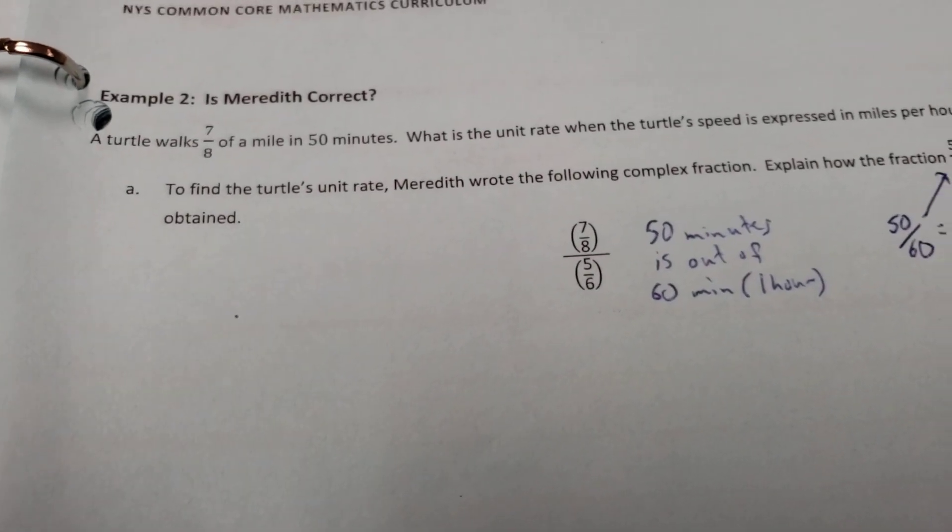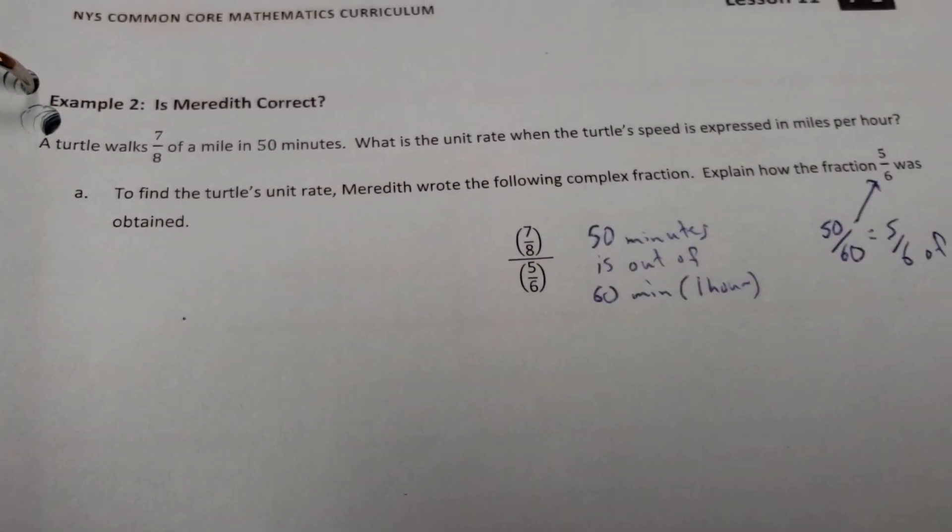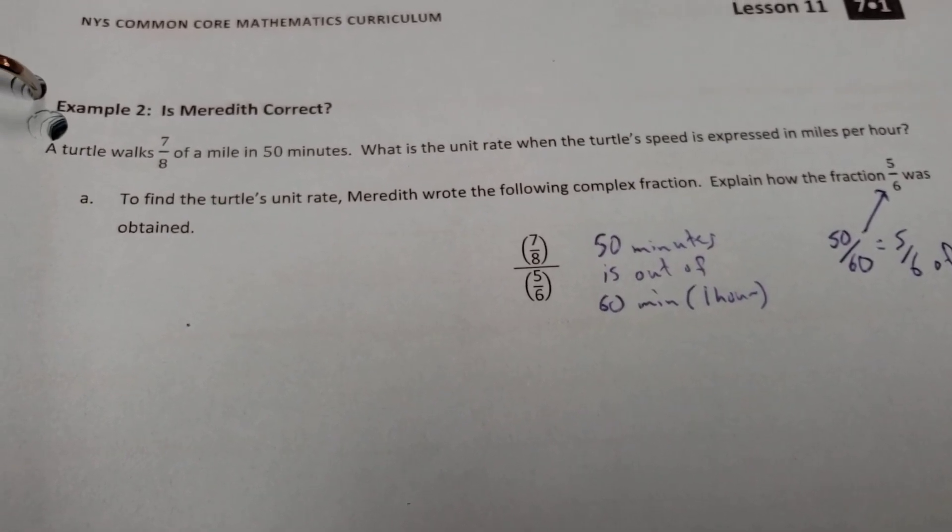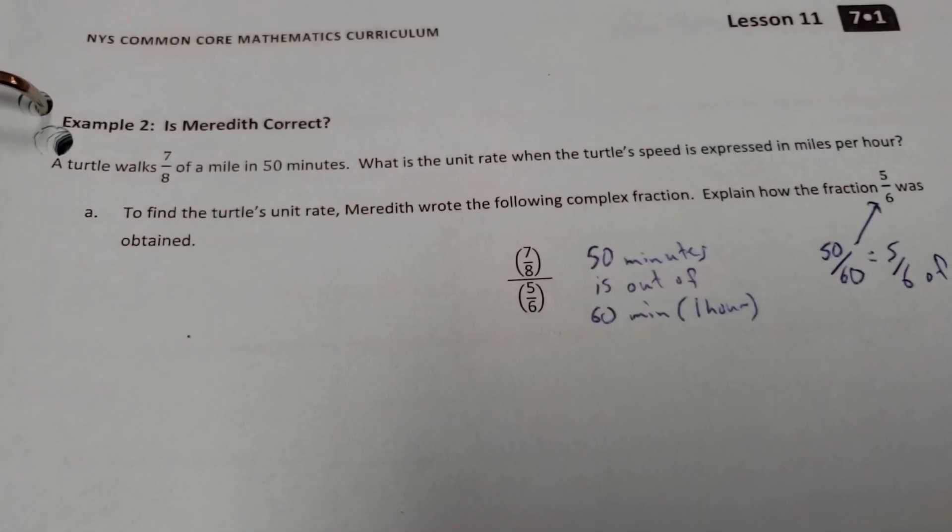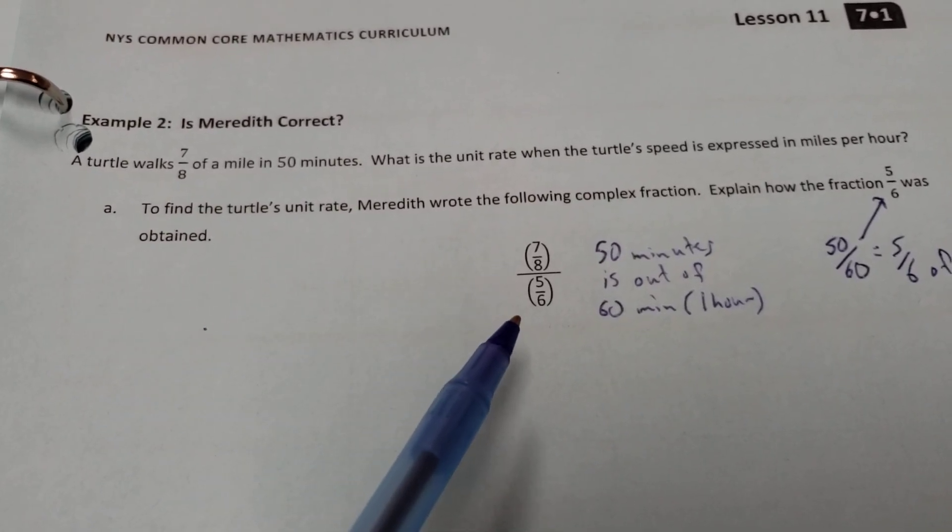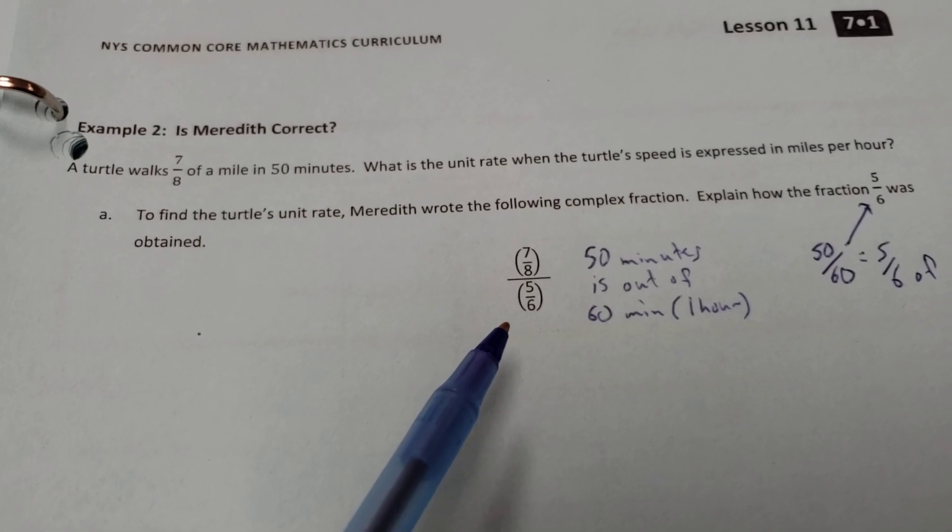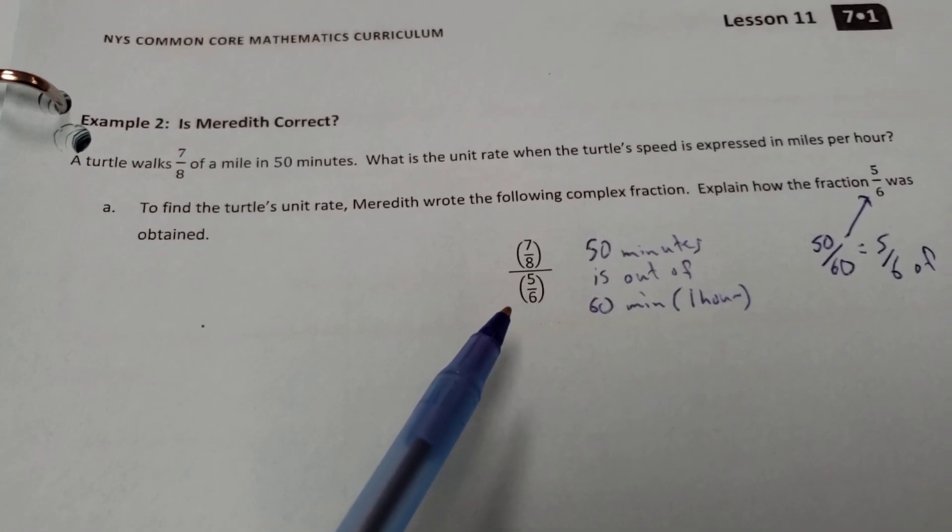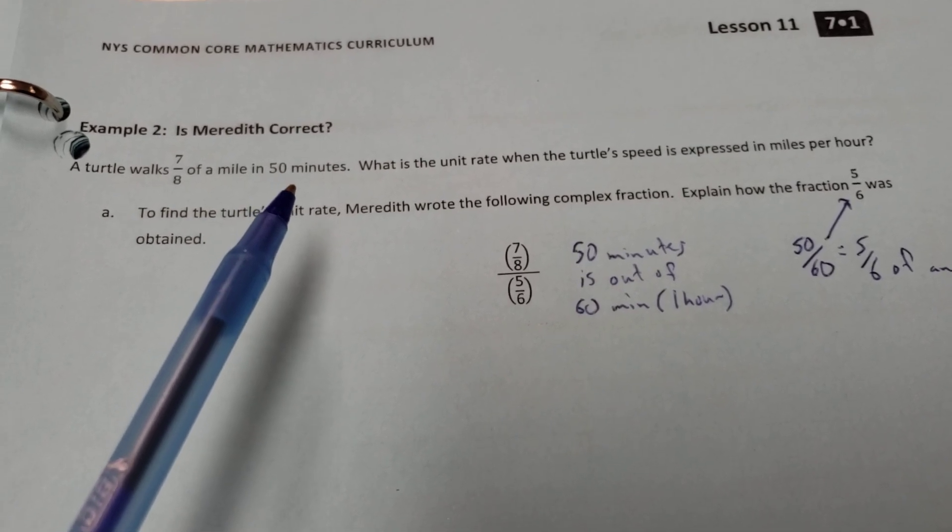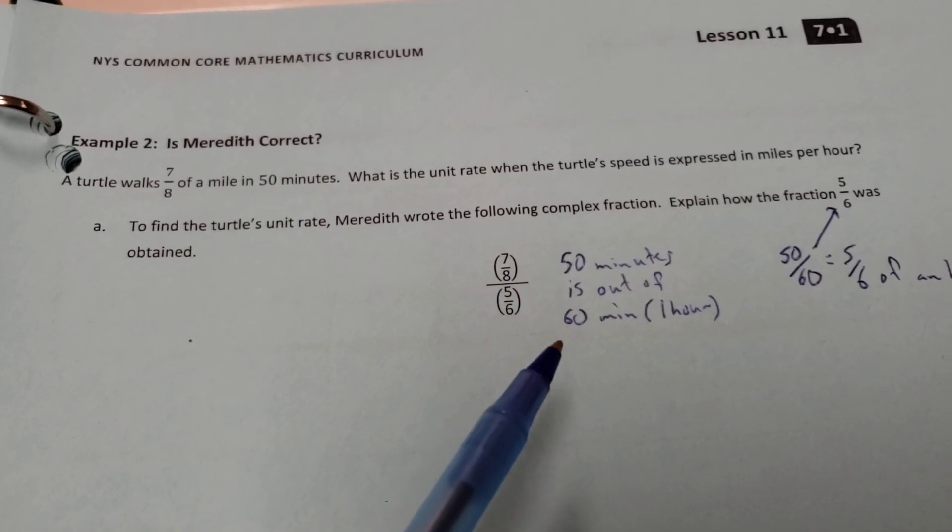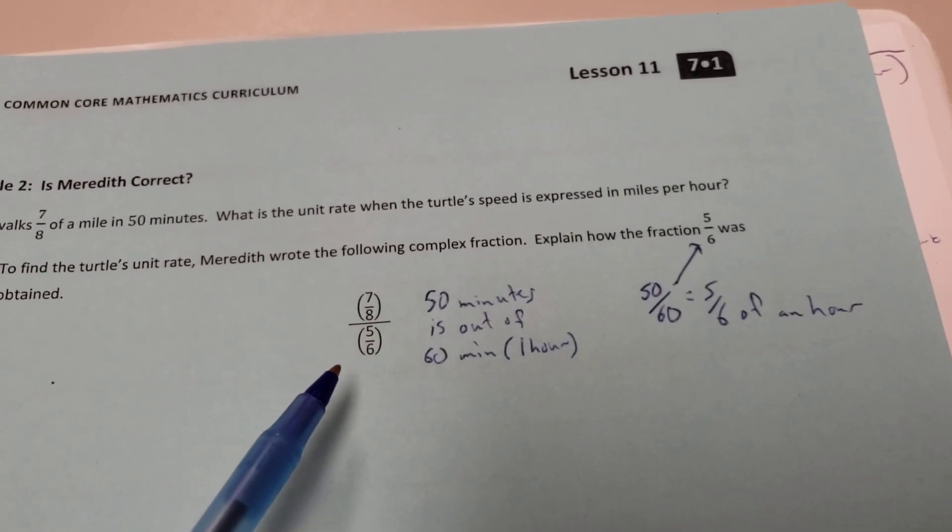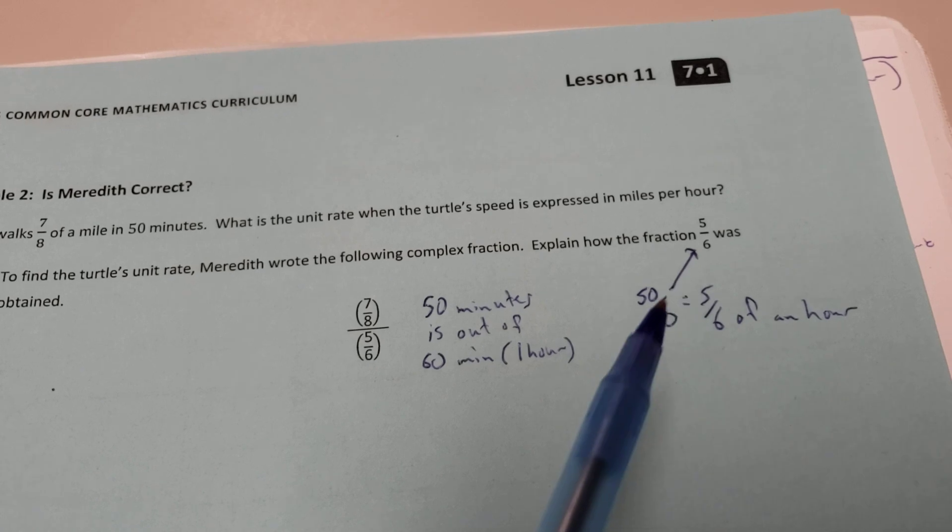All right. A turtle walks 7/8ths of a mile in 50 minutes. What's the unit rate when the turtle's speed is expressed in miles per hour? Well, to find the turtle's unit rate, Meredith wrote the following complex fraction. She wrote 7/8ths over 5/6ths. Explain how the fraction 5/6ths was obtained. Well, 5/6ths came from what we did kind of in our earlier problem just a minute ago. 50 minutes is out of 60 minutes. So 50 out of 60 in lowest terms is 5/6ths.